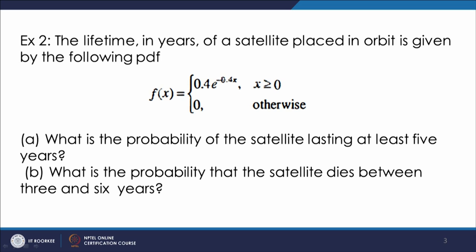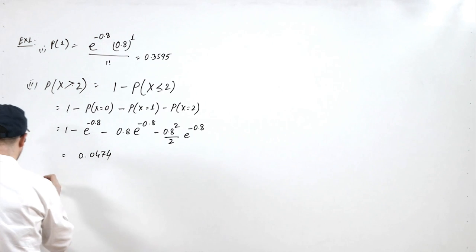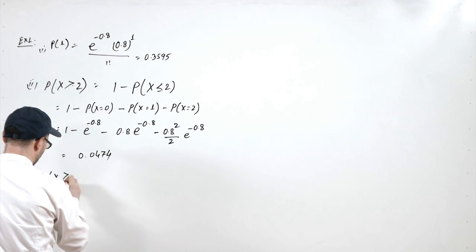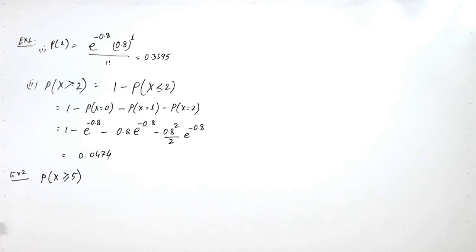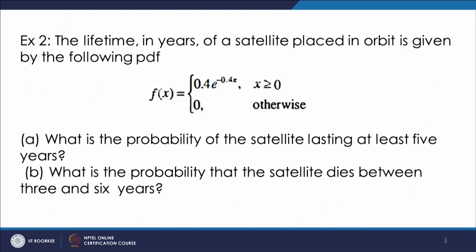The next problem states that the lifetime in years of a satellite placed in orbit is given by the PDF f(x) = 0.4·e^(-0.4x) for x ≥ 0, and 0 otherwise. We have to find the probability of the satellite lasting at least 5 years.